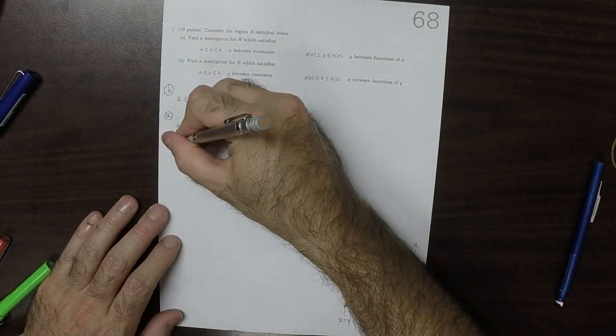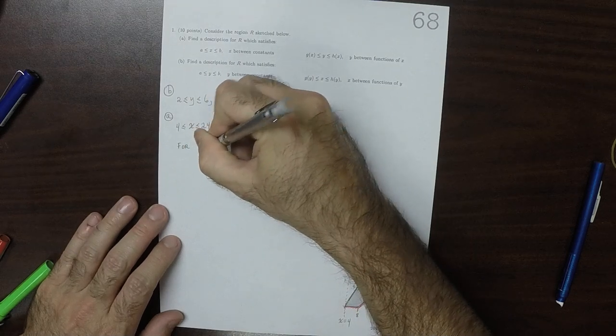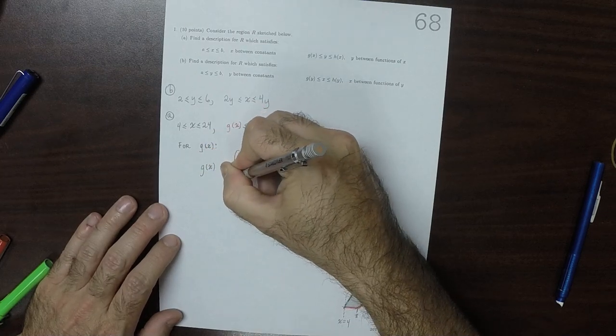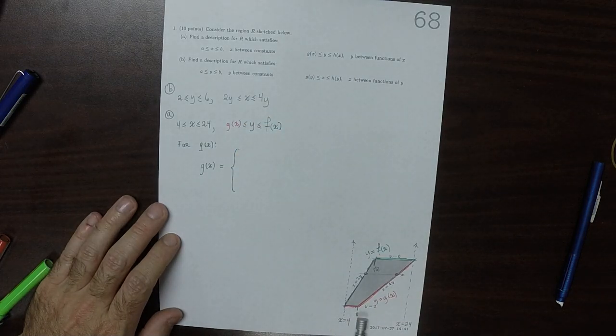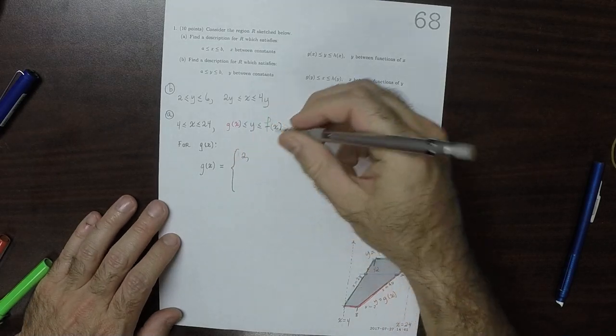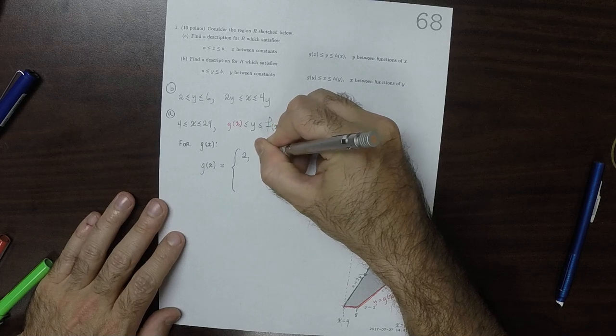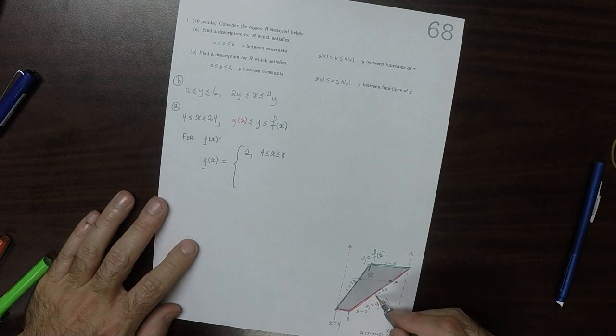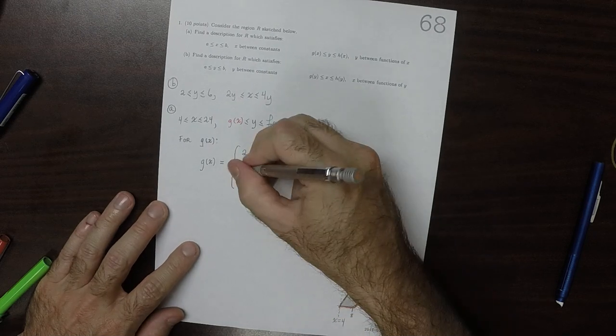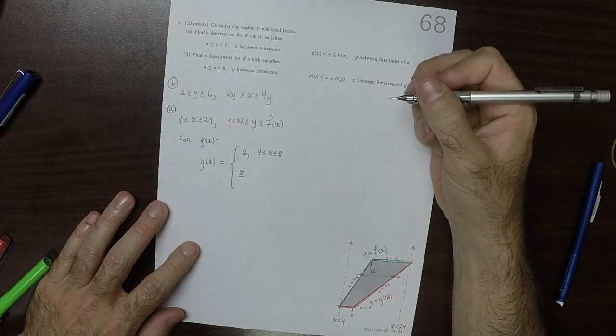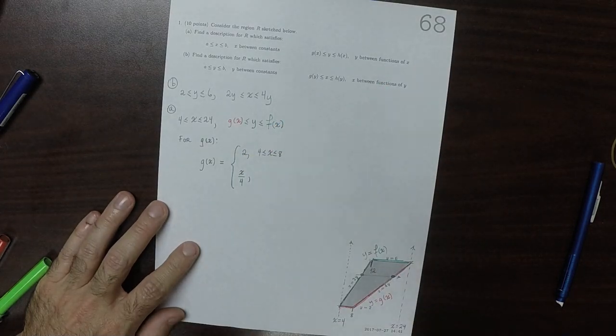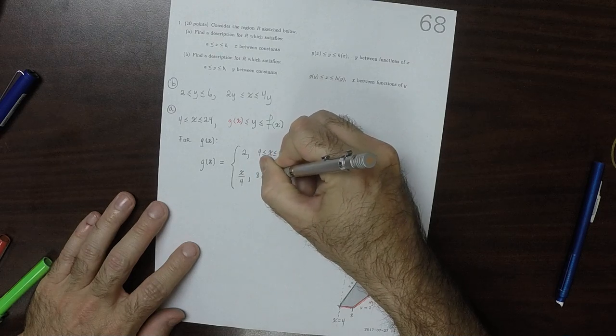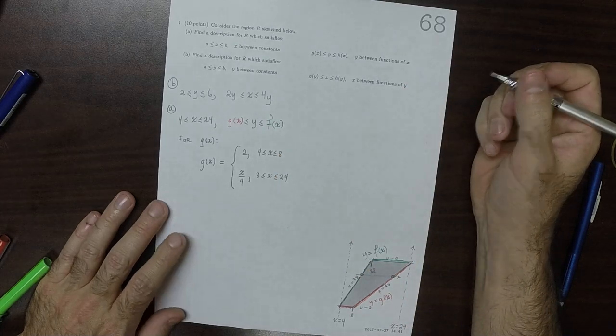For G of X, we can see that G of X must consist of two lines. In between 4 and 8, the output is 2. So it'll be 2 if 4 is less than or equal to X is less than or equal to 8. And then, since this is X is 4Y, solving for Y, we'd have X over 4. So it would be X over 4 if X is between 8 and 24.